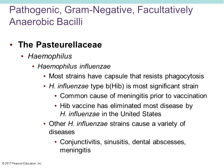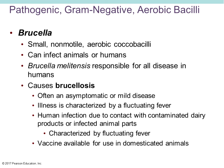Moving on to gram-negative facultative bacilli — the next group are the Pasteurellaceae. Haemophilus influenzae species are usually small, pleomorphic bacilli with slightly different growth requirements. Haemophilus influenzae type B is the most significant strain — it can cause meningitis, and we do have a vaccination for it. Newborns usually receive it before leaving the hospital, and this vaccination has eliminated most of the disease in the United States. Other Haemophilus strains can cause conjunctivitis, sinusitis, dental abscesses, and even meningitis.